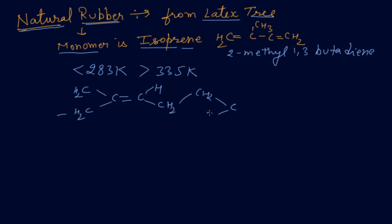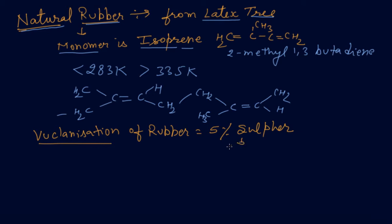To make it more useful, we use vulcanization of rubber. What do you mean by vulcanization of rubber? We are adding 5% sulfur into it, which increases its elastic property.